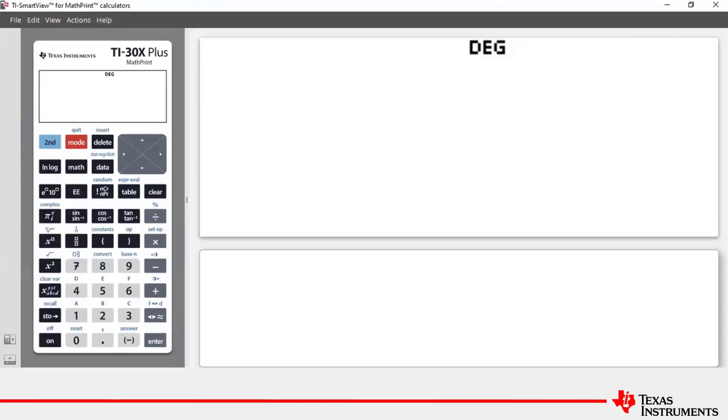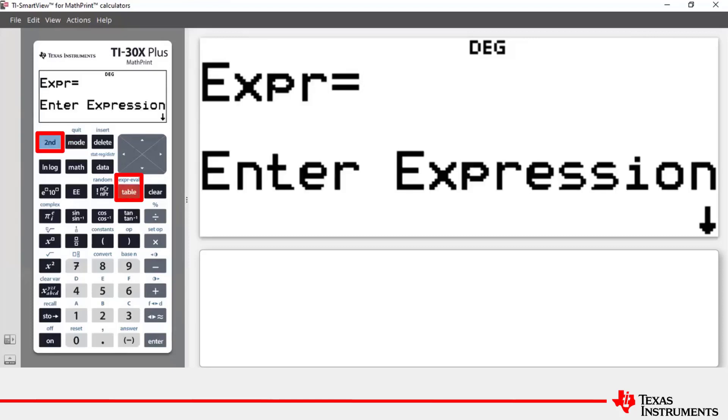To access this feature press second table. What we're going to do is enter an expression and then evaluate it.